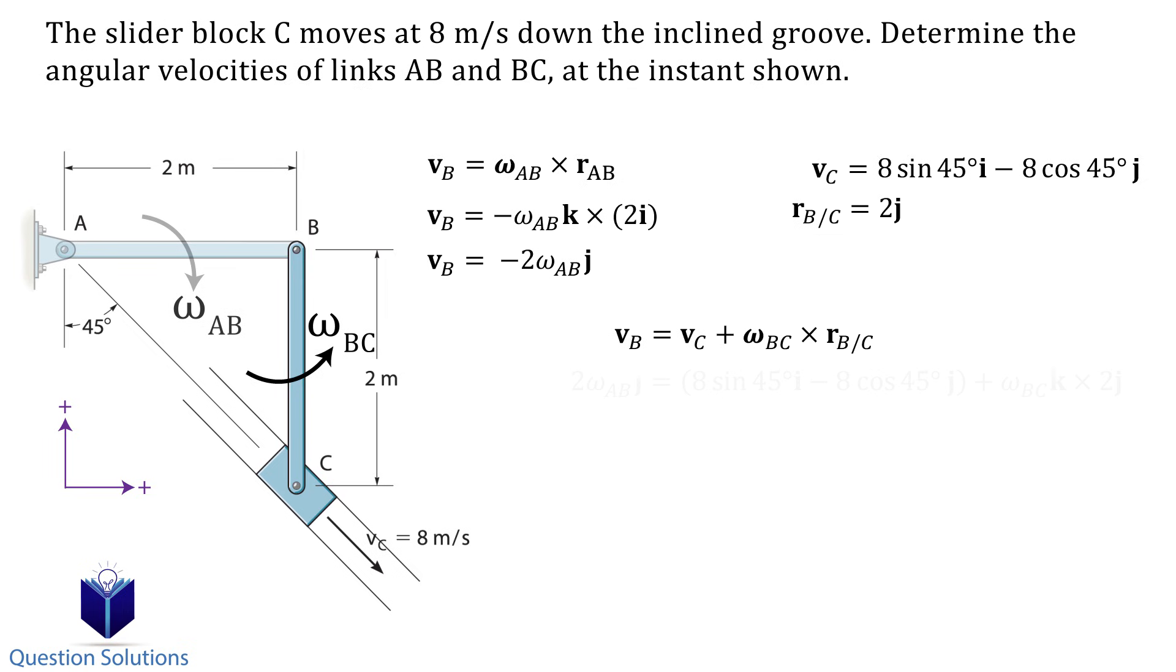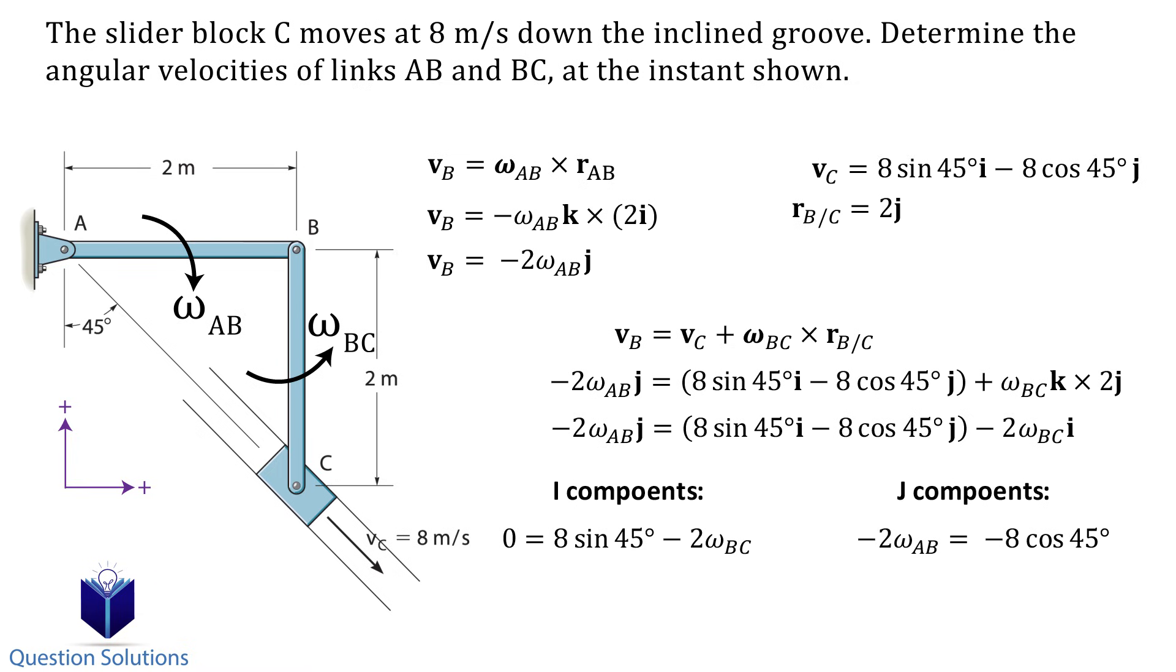Let's plug in what we know into the equation. Don't forget, we already expressed VB. The angular velocity of link BC is positive since it's counter-clockwise. Let's do the cross-product first. So remember, K cross J is negative i. We can now solve by equating i and j components together. So we see that both links have the same angular velocity, just in opposite directions.